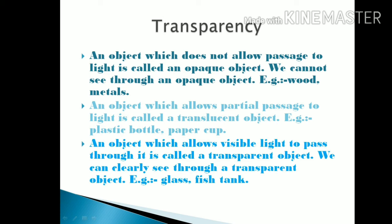The third category: an object which allows visible light to pass through it completely is called a transparent object. We can clearly see through a transparent object — like a glass or a fish tank. So on the basis of transparency we can divide things into three groups, and that is what this video covers.